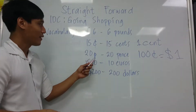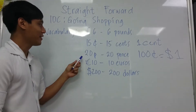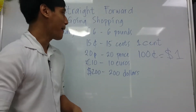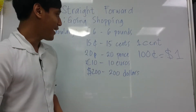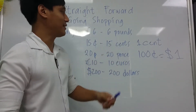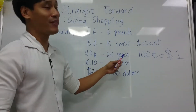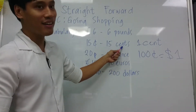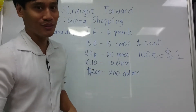Next is the small p, so that is 20 pence. Pence is like cents — it's the same thing. But usually cents is for dollars, and pence is for pounds and euros.